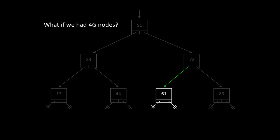So here's a question, what if we had 4 billion nodes? And if you didn't know, 4G is actually 4 billion. Well interestingly enough, the log base 2 of 4 billion is 32, meaning that if we had 4 billion nodes inside this binary search tree, it would only take us 32 steps to find the node that we're looking for. And you have to appreciate that.